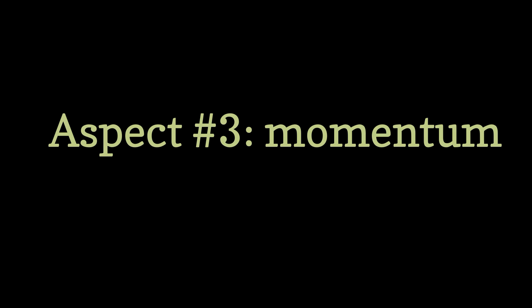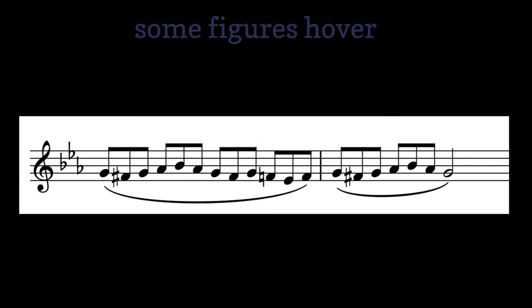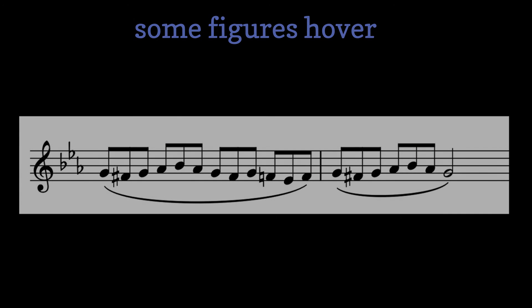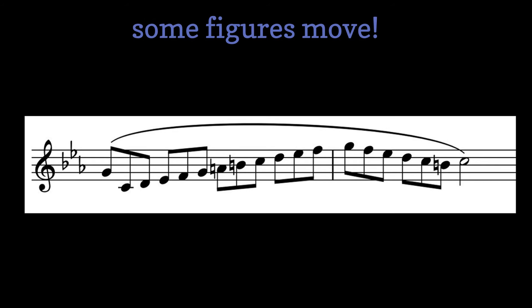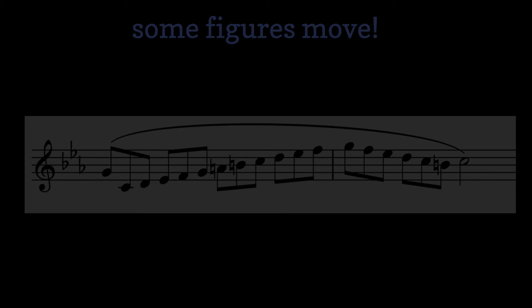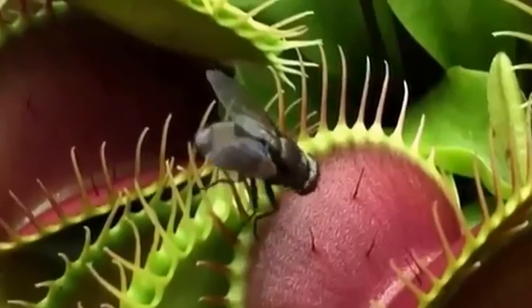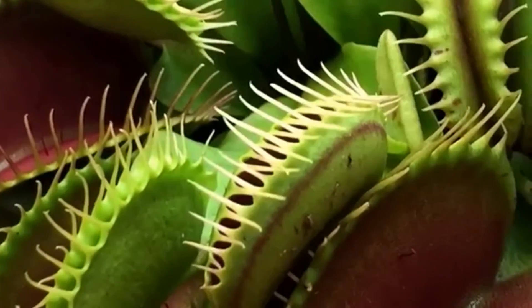The third aspect I'd like to talk about is that each figure type has its own sort of rhythmic momentum. For example, some figures seem to hover, while others clearly move. About the flowers — when I thought about plants that move on their own, this is all I came up with.